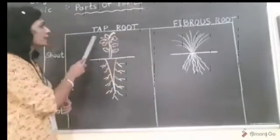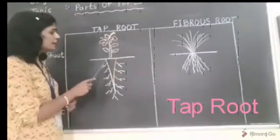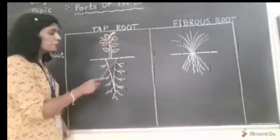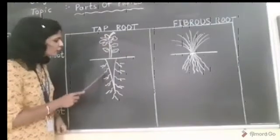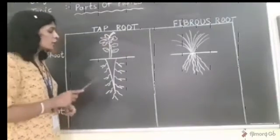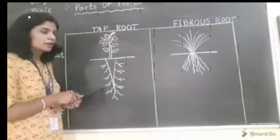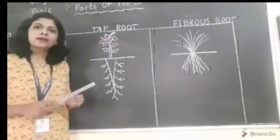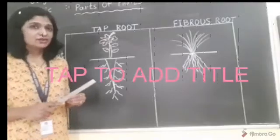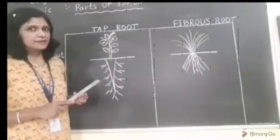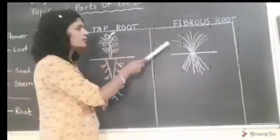Many plants have one main root and small thin roots grow from that main root. It is called taproot. The examples of taproot are carrot, radish, mustard and hibiscus.